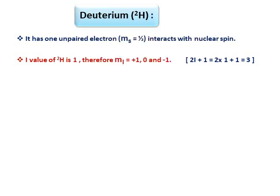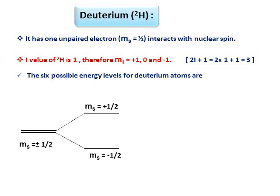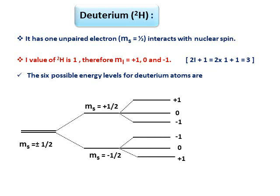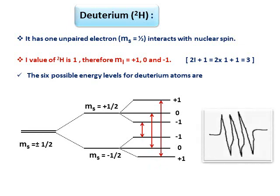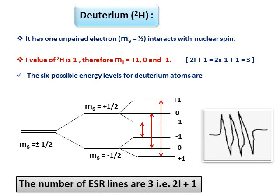Second example: deuterium. In deuterium there is one unpaired electron, so MS = ±1/2. The nuclear spin I value of deuterium is 1 (odd protons, odd neutrons), so MI = +1, 0, and −1. Therefore 2I+1 = 3, meaning three ESR lines are possible. There are six possible energy levels for deuterium atoms — two from the MS splitting in the magnetic field and three MI interactions for each — but according to the ESR selection rule only three lines appear. The ESR spectrum of deuterium shows three lines.